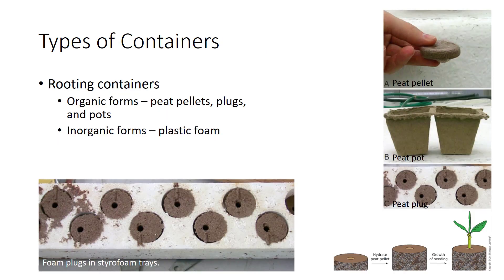A variety of containers are available for different uses, which can be broken down into three groups: rooting containers, bedding plant containers, and green and flowering plant containers. Rooting containers come in organic and inorganic forms. Organic forms include peat pellets, peat plugs, and peat pots. The dry, compressed peat pellet is flat, saving space during storage. Upon hydration, it expands and is ready for seeding or sticking a cutting. The seedling can be transplanted directly without removing it from the moss medium. Inorganic forms are made of plastic foam or compressed plastic or inert inorganic materials in the form of a cube or block, similar to peat plugs.